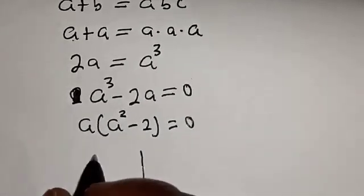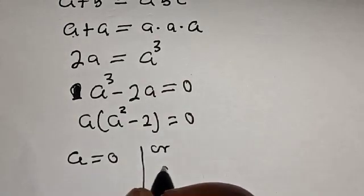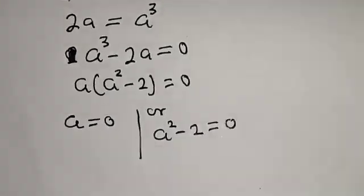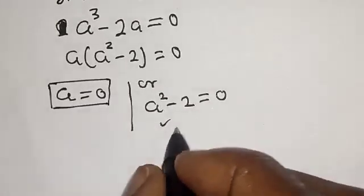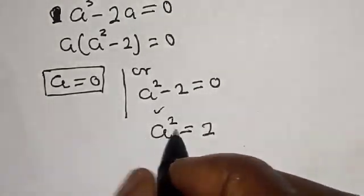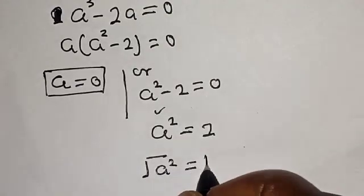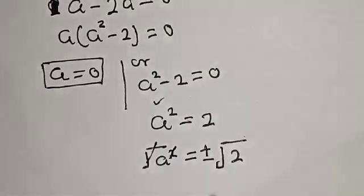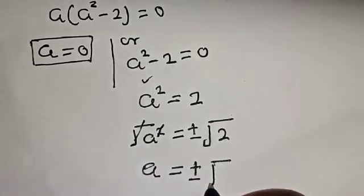There are two cases. Case one: a equals zero. Case two: a squared minus 2 equals zero, which gives a squared equals 2. Taking the square root of both sides, a equals plus or minus the square root of two.